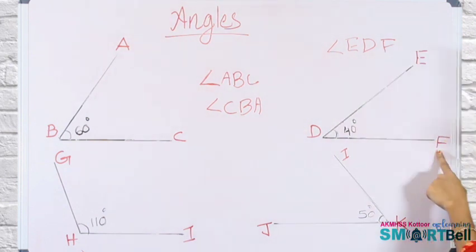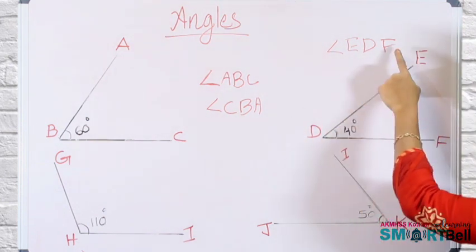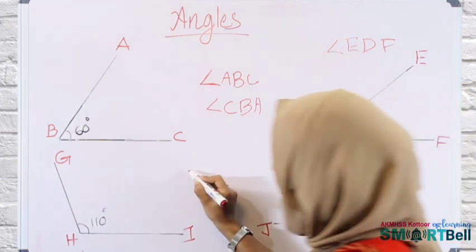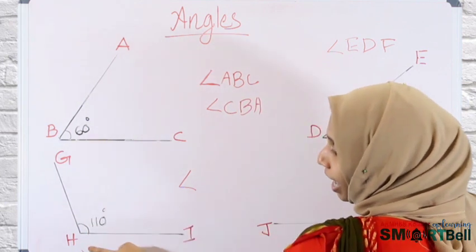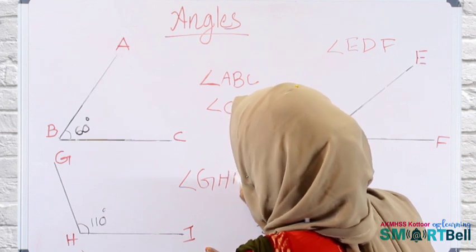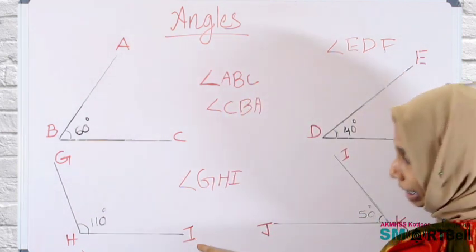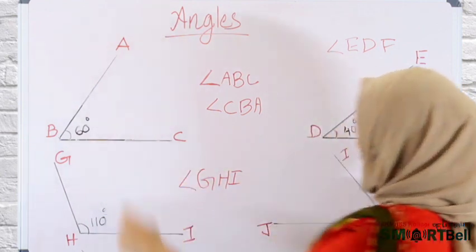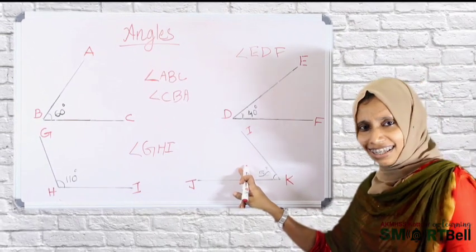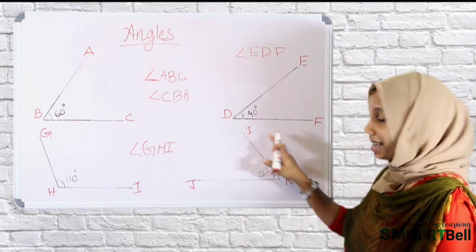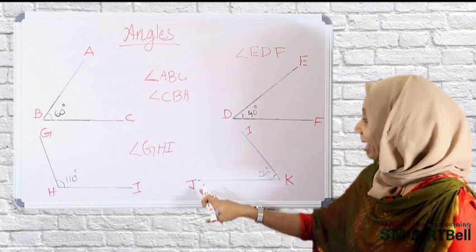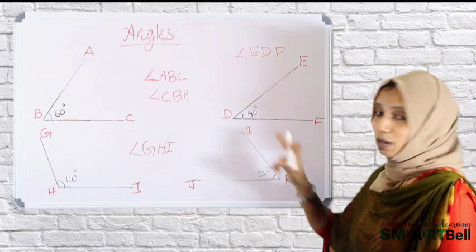Angle GHI. Either you can call angle IHG. Then tell me what's the name of this angle? Yes, you are right, angle IKJ. Either you can call angle JKI.